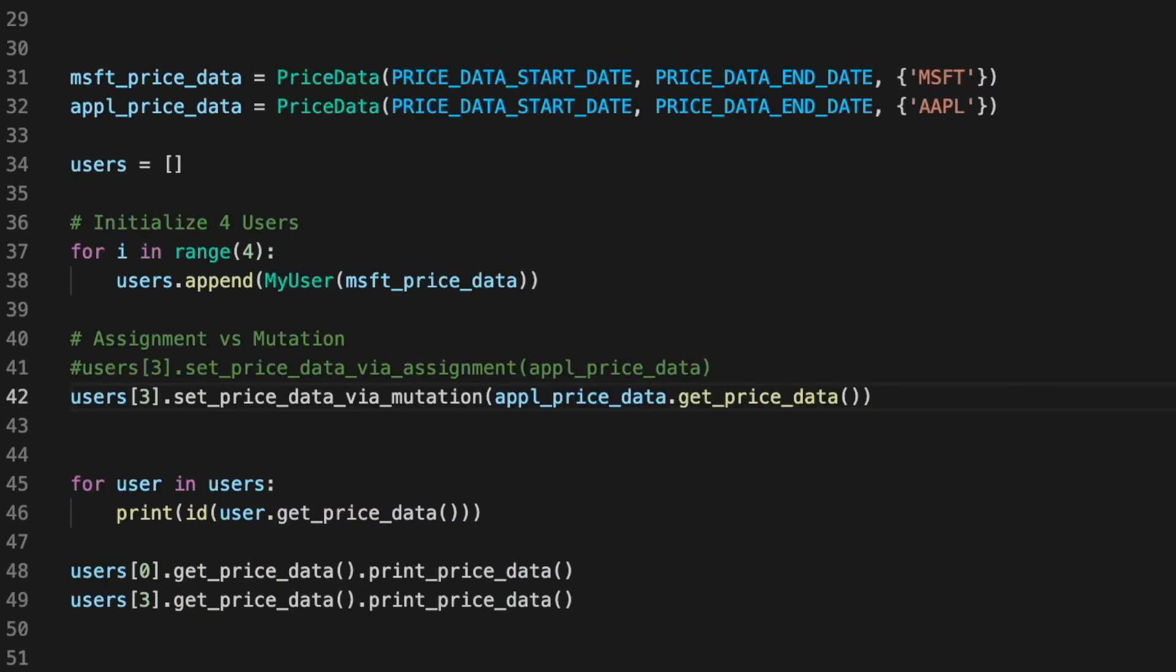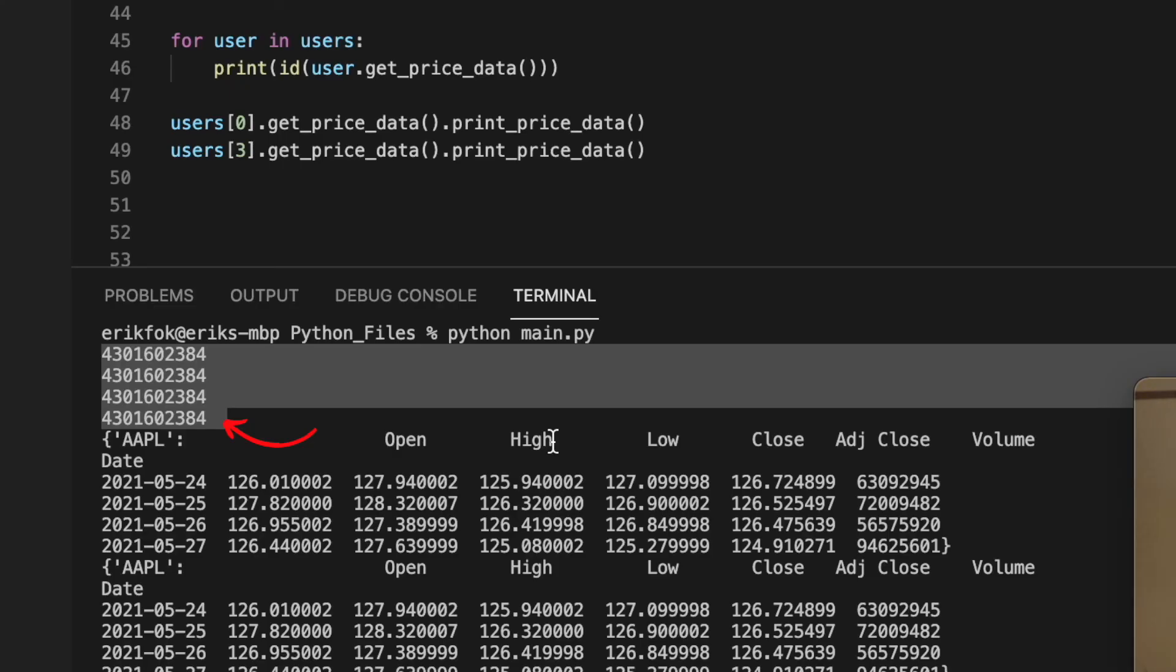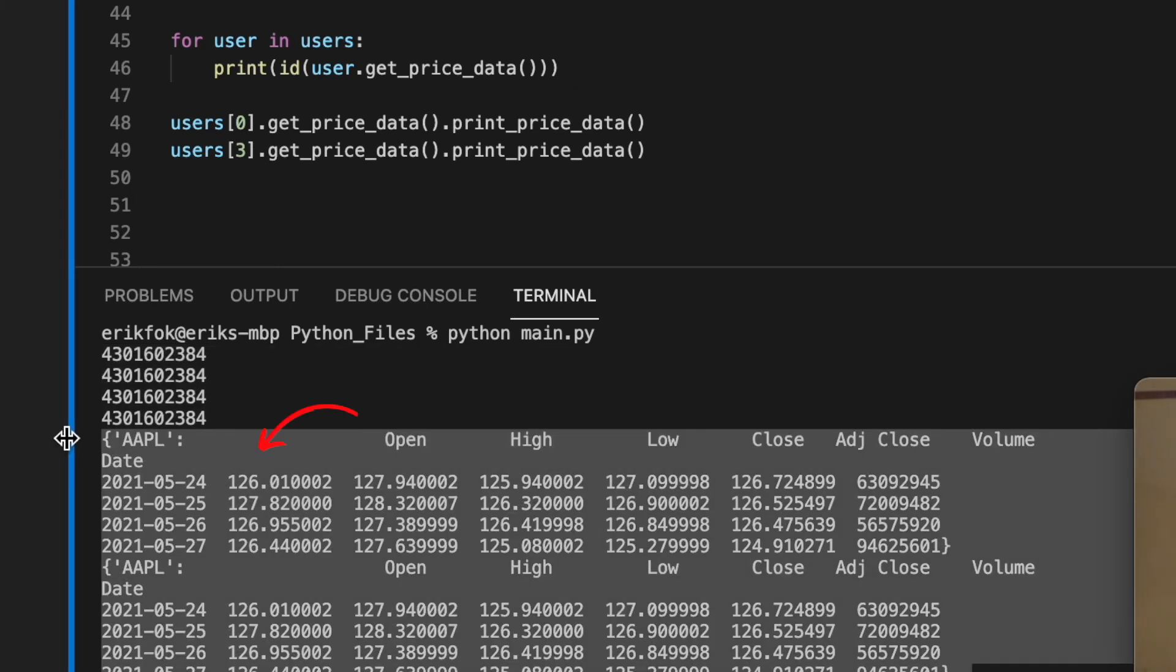When we run this program, we can see entirely different behavior. When we mutate a value, the object we're referencing has not changed. However, the contents of the object has changed, and this change affects all of our users.